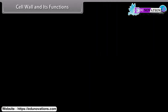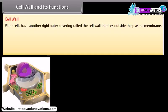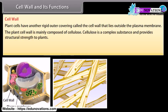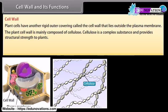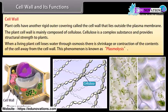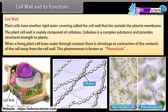Plant cells have another rigid outer covering called the cell wall, which lies outside the plasma membrane. The plant cell wall is mainly composed of cellulose, a complex substance that provides structural strength to plants. When a living plant cell loses water through osmosis, there is shrinkage or contraction of the contents of the cell away from the cell wall. This phenomenon is known as plasmolysis.